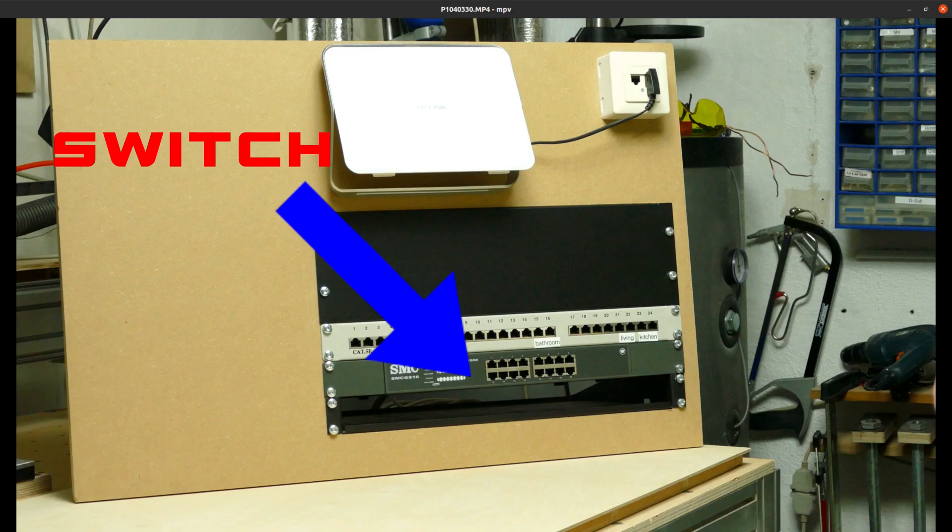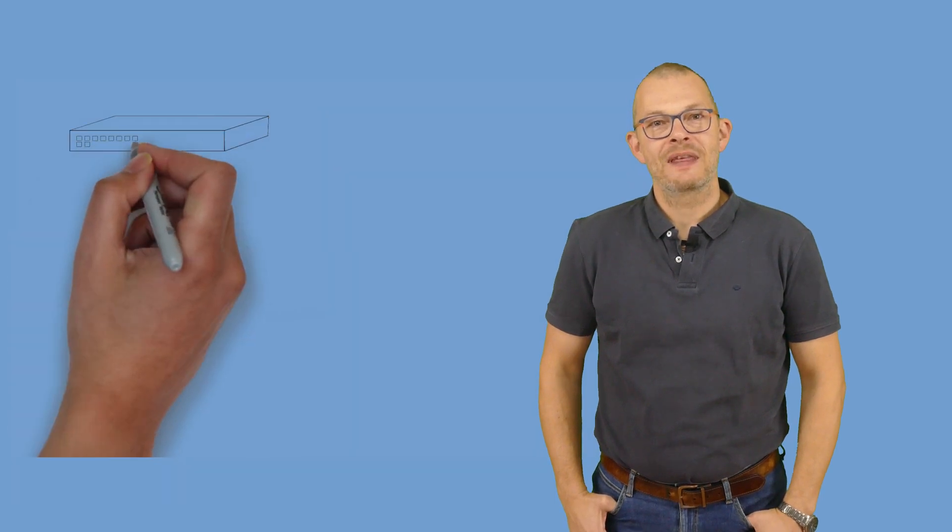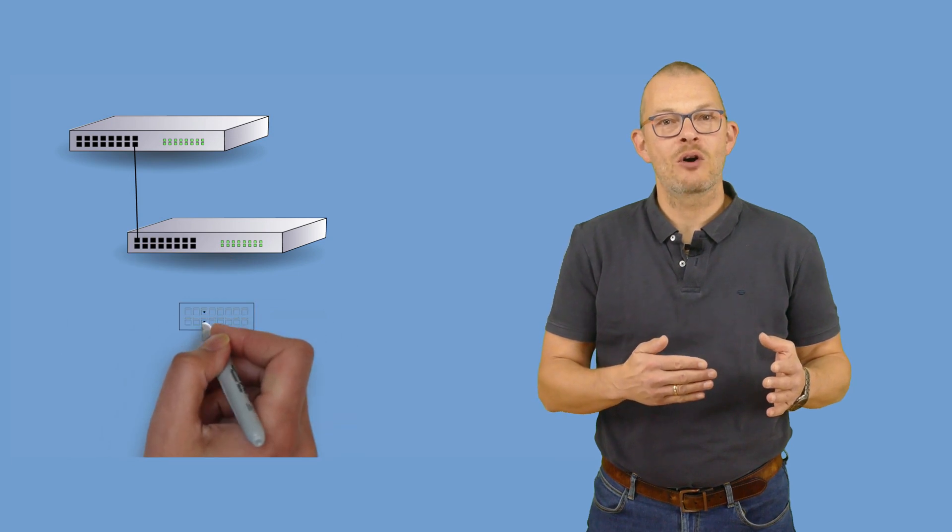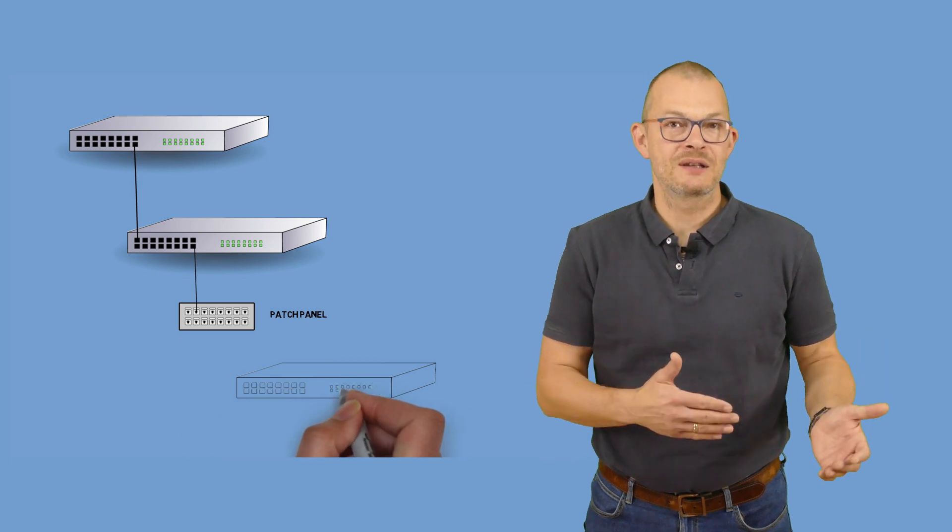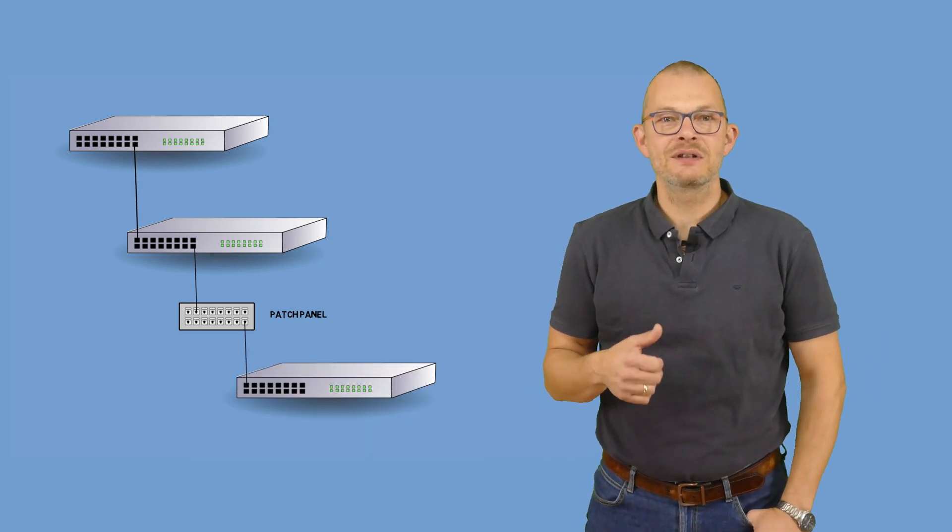The second central component here is the switch. This is the part of our installation that interconnects all the ethernet components. That means our PCs, laptops, printers, Raspberry Pis and so on if you want to wire them rather than use WiFi. The good thing with switches is that they can be interconnected. So in other words, you can not only connect a PC or printer or any other ethernet device to a switch, but you can also connect another switch. Let's actually do this as a first step and connect the switch portion of our ISP's router to the central switch.